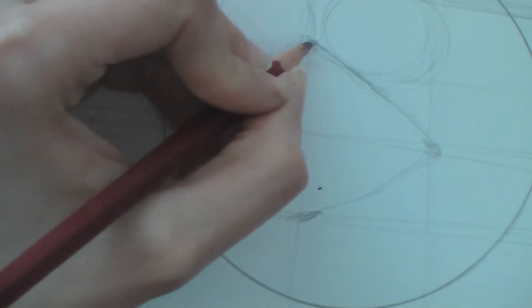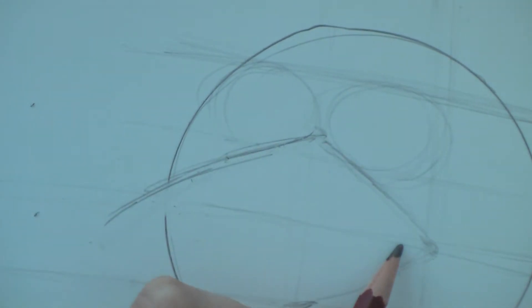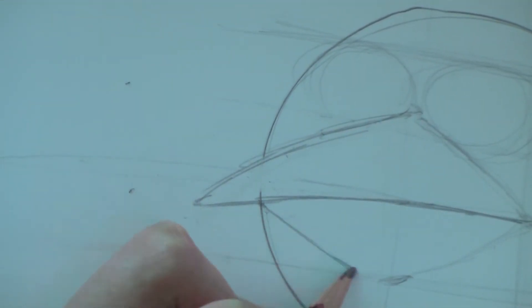And then you are going to curve this down. Pull it out. And then this guideline you already have to help do the beak. And then this line right here right at the edge goes down.